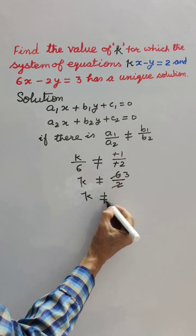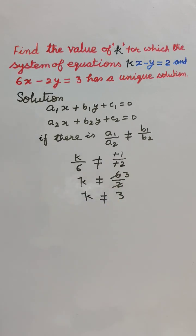k is not equal to 3. For the value k not equal to 3, the system of equations kx minus y equals 2 and 6x minus 2y equals 3 has a unique solution.